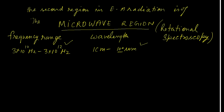The energy separation in the microwave region is of the order of hundreds of joules per mole. So the energy range is of the order of 100 joules per mole.